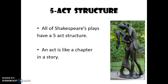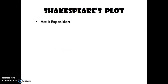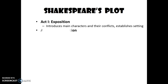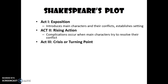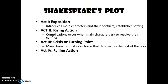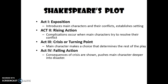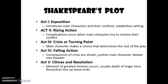All Shakespeare plays have a five-act structure. An act is basically like a chapter in a story or novel. Act one typically deals with the exposition — introducing the main characters and their conflicts and establishing the setting. Act two is often rising action, where complications occur when main characters try to resolve their conflict. Act three is the crisis or turning point, where main characters make choices that determine the rest of the play. Act four is falling action, where consequences of the crisis push main characters deeper into disaster. Act five is the climax and resolution — or denouement — where the moment of greatest tension occurs, usually with the death of the tragic hero, and the resolution ties up loose ends.